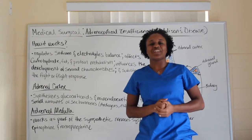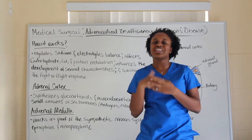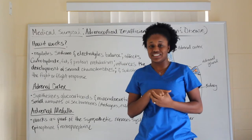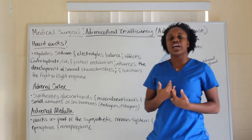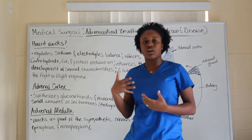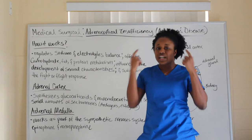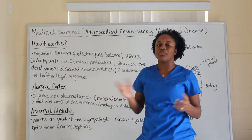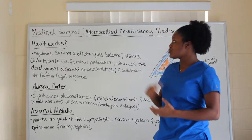Hi everyone and welcome back to the journey. Today we're going to be talking about adrenal corticoid insufficiency, also known as Addison's disease. Before we get started, I'm going to give you a quick rundown of how the adrenal glands work, so that when you see the effects of what's going on, it kind of clicks and you get that aha moment.